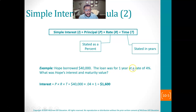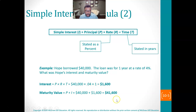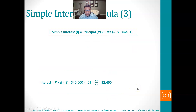Hope borrowed $40,000 for one year at the rate of 4%. What is Hope's interest and maturity value? For one year, instead of 6/12, you could say 12/12, which equals 1. So 1 times 0.04 times 40,000 is $1,600. The interest is $1,600, and the maturity value is the amount she originally borrowed plus the $1,600, which is $41,600.